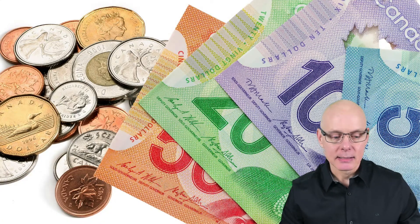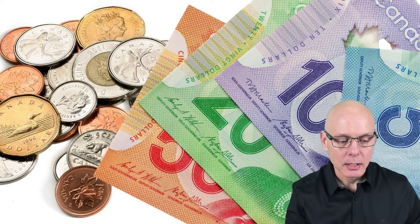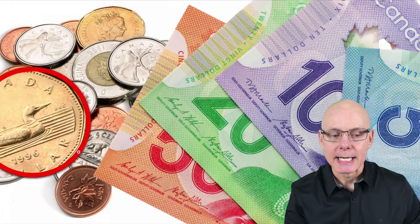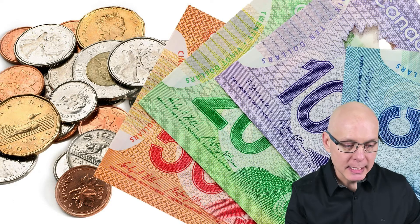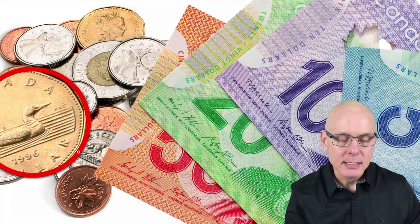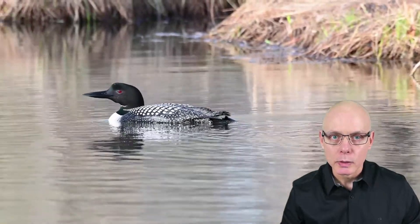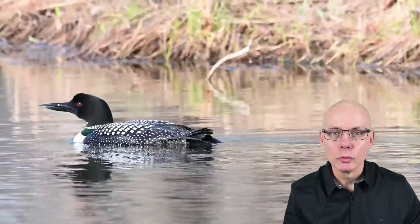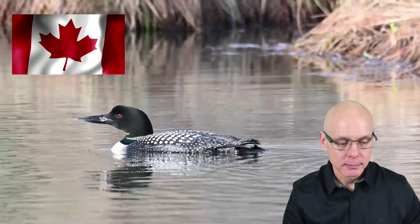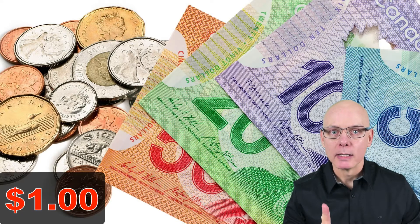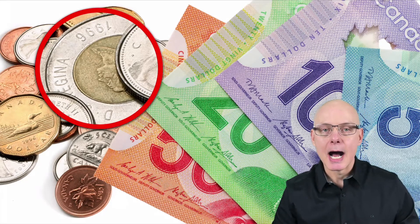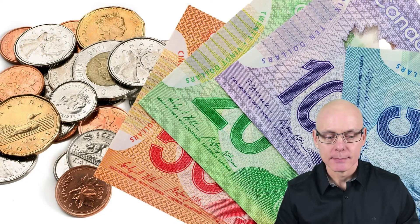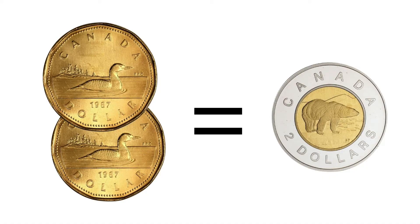In Canada, we have a coin called a loony. This is a loony. It's called a loony because there's a loon. This coin is worth $1.00. This coin here is called a toony. It's called a toony because it is worth $2.00.